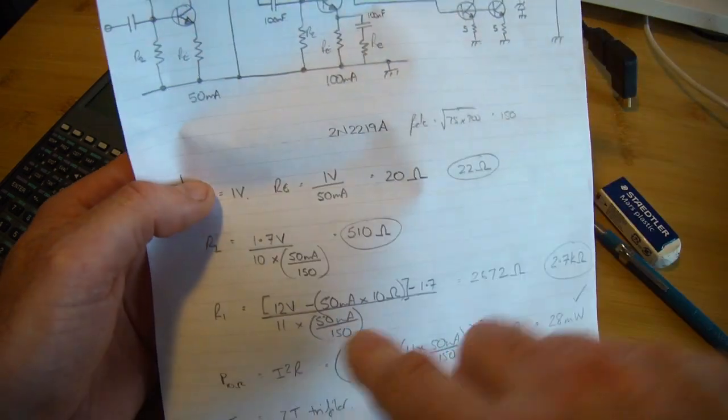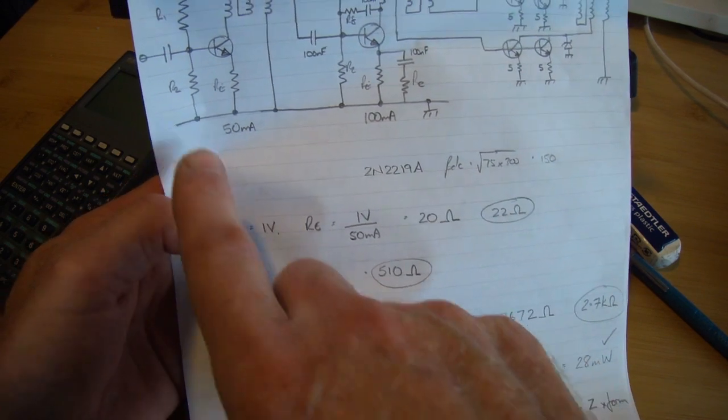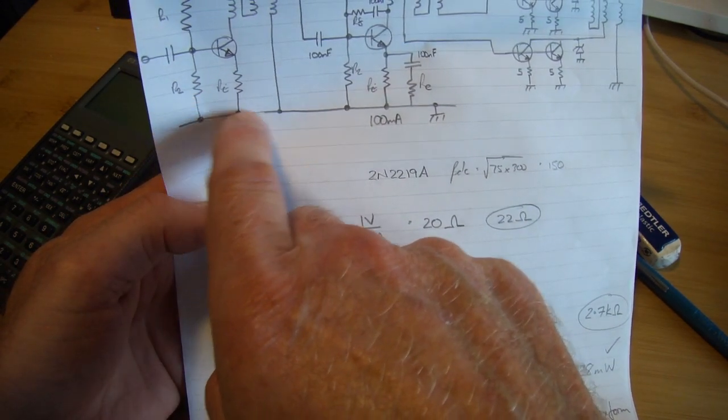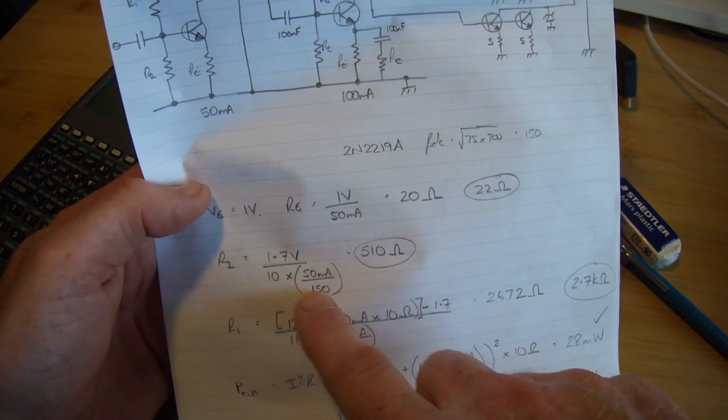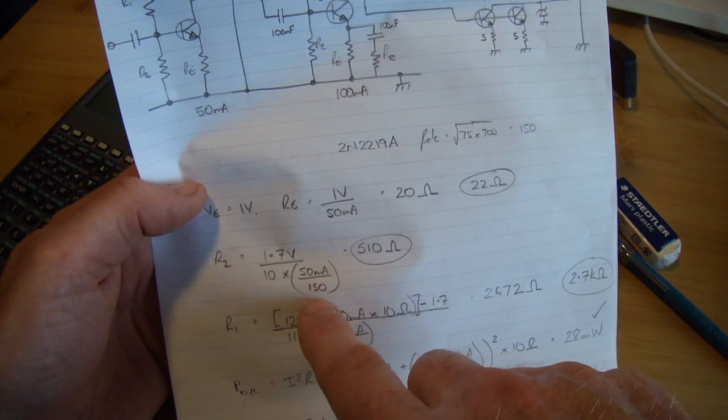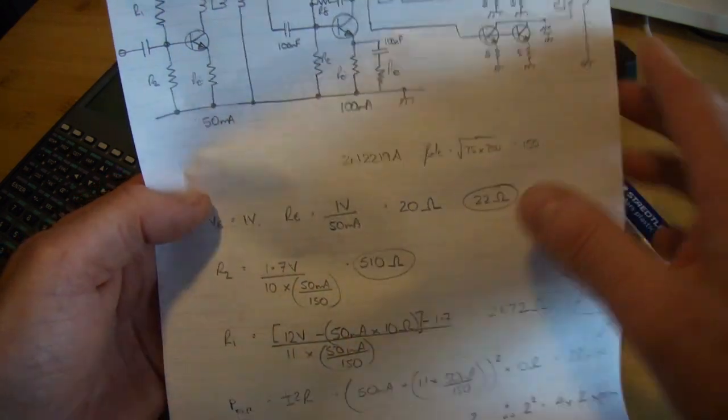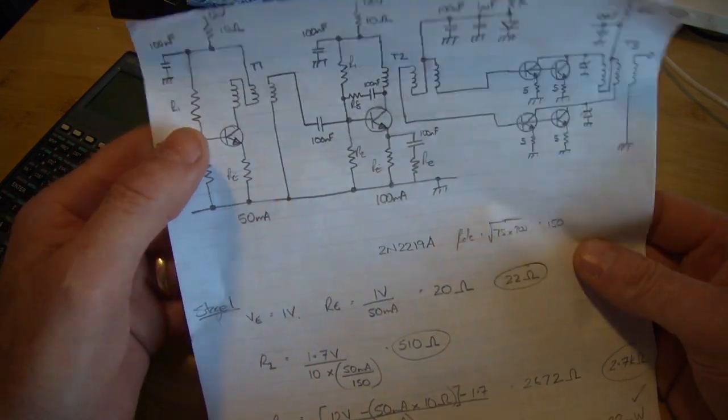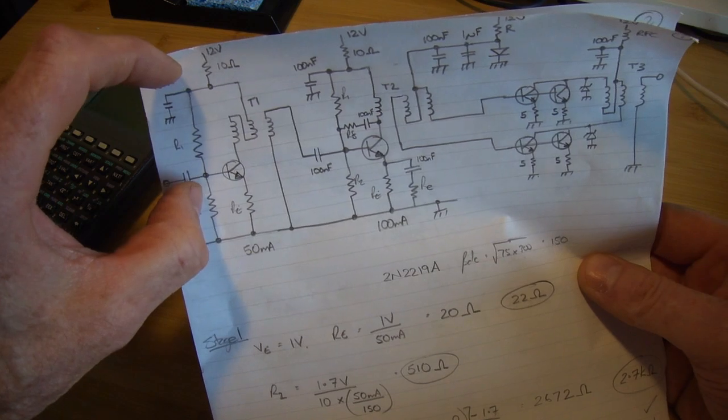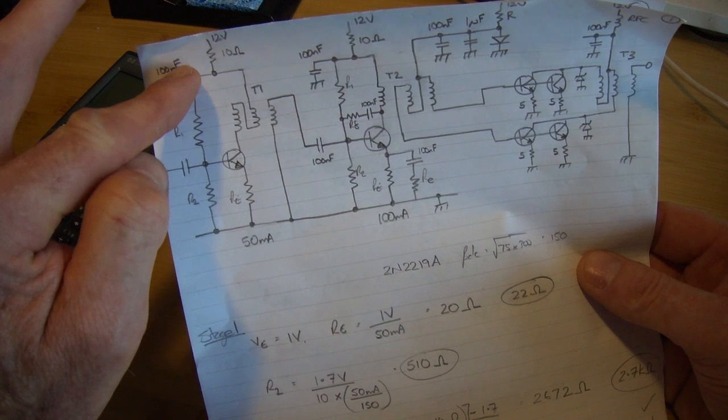So once we have our 1.7 volts, we can then work out what that value would be, noting that we want to have passing through that device there, 10 times the base current, which we see there, 10 times our base current, 50mA divided by 150. It comes out at 510 ohms, so standard value off the bat, which is nice. R1, just looking at that voltage drop across that device, divided by 11 times the current through, because we have now one more coming through the device.